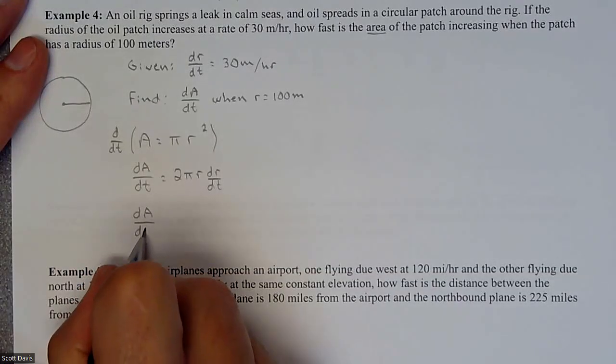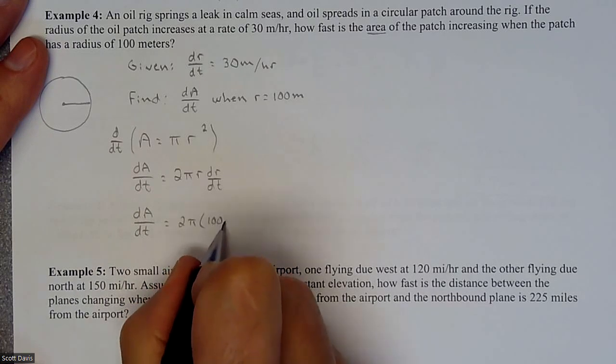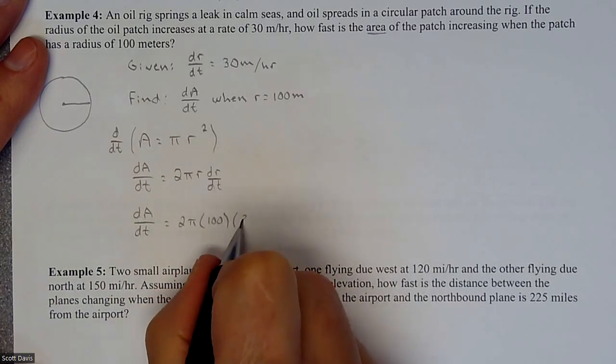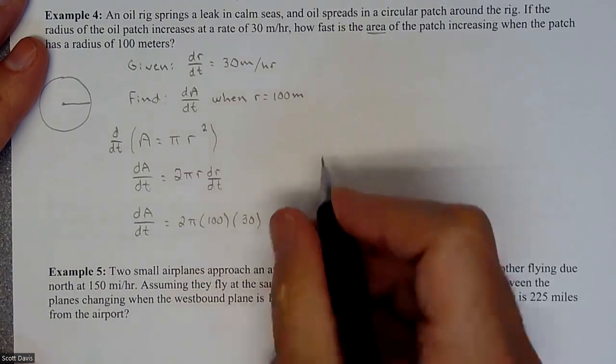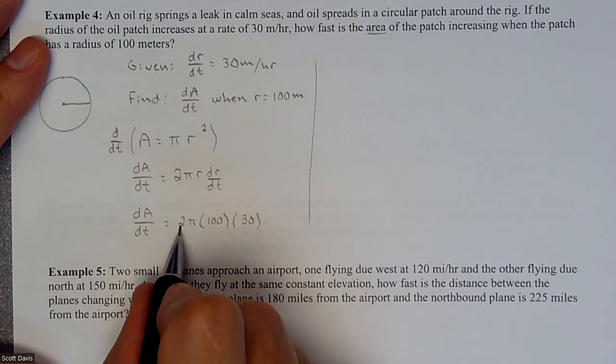So we have dA/dT equals 2π times a radius of 100 times a rate of 30. So if I put all that together I got six.